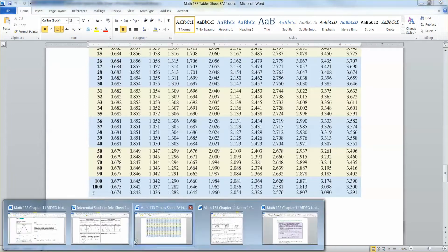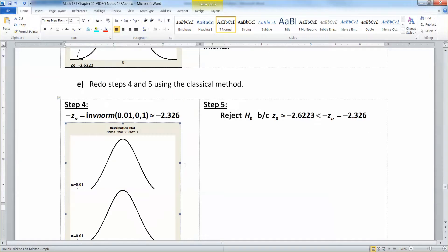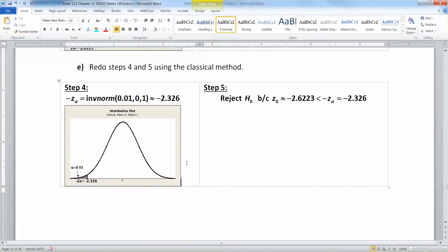And then you have to know, because of the drawing you did, that it must be negative because it's a left-tailed test right here. So since it's a left-tailed test, that negative Z alpha has got to be over there on the left. And you don't need to redo step six because it'd be the same thing you already said.